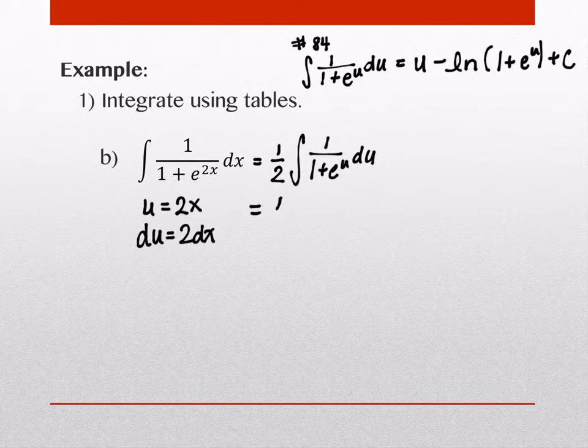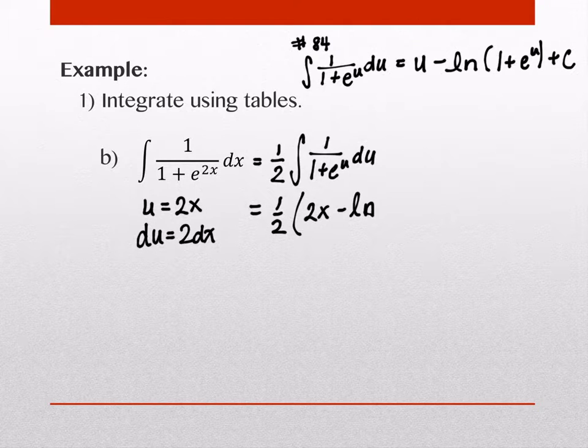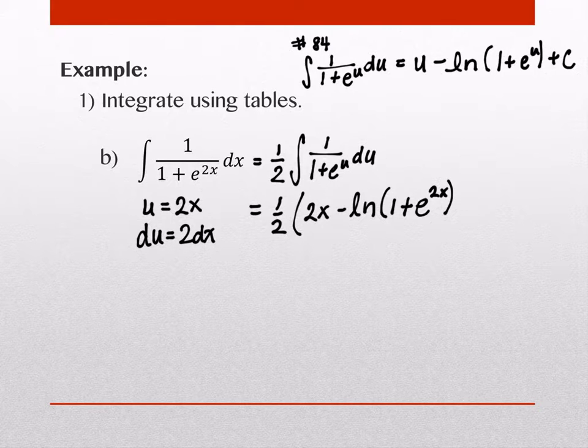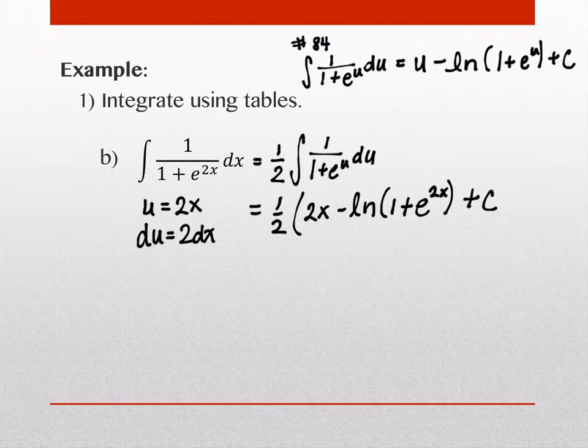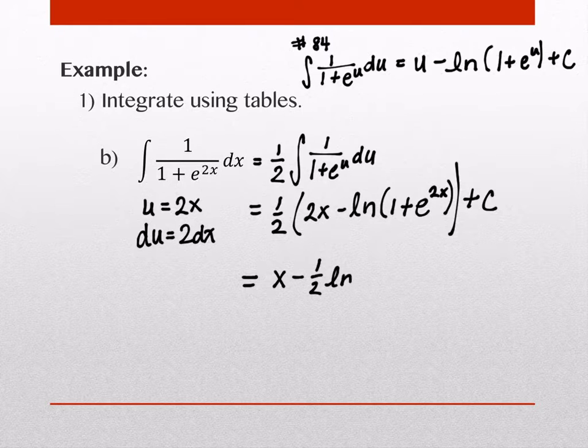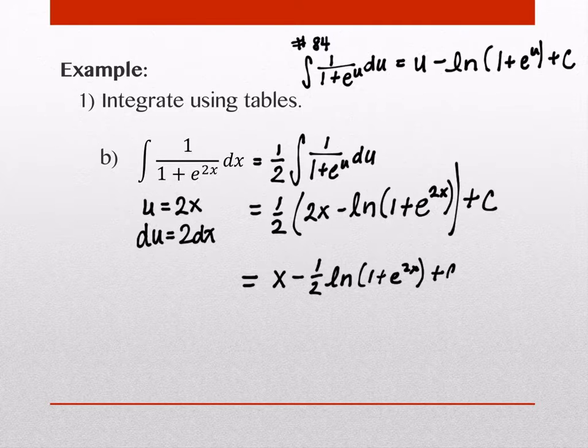So we're going to be able to do this. So we've got 1 half, and then we have u. Our u is 2x minus the natural log of 1 plus e to the u. So that's e to the 2x, and then plus c. You can put the plus c in parentheses or not in parentheses. It doesn't really matter. We're not really going to multiply it by the 1 half. We are going to distribute the 1 half through. So I'm going to get x minus 1 half natural log of 1 plus e to the 2x plus c.